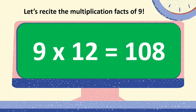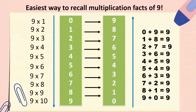There's a special and easy way to recall the multiplication facts of 9. You can write the numbers from 0 to 9 in increasing order — starting from 0, the lowest, going up to 9. On the other side, write the numbers from 9 going down in decreasing order, from 9 to 0.